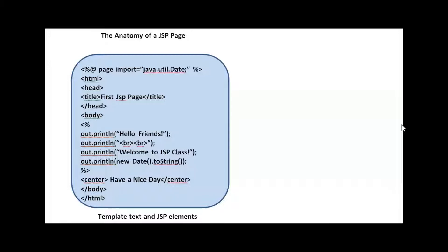You can place all the static HTML in a JSP page just as in a regular web page, and add JSP elements to generate the dynamic parts of the page. There are three kinds of JSP elements. Let us take a look at the elements first, and then we'll come back to the anatomy of the JSP page.